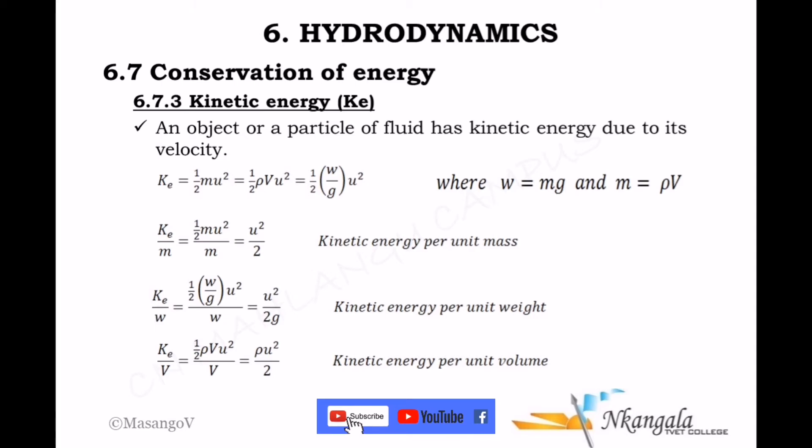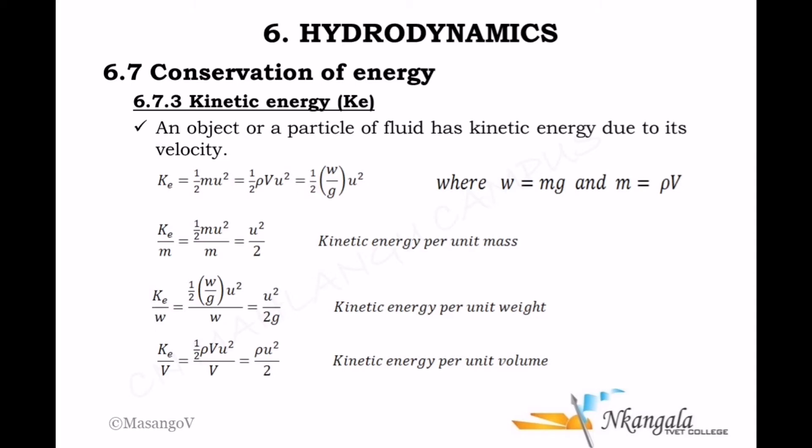The last form of energy is kinetic energy — the energy a fluid has because it is in motion and has velocity. We calculate kinetic energy using ½mv². Since mass is density times volume, or weight over g, we can replace that to get a number of equivalent equations. Similarly, kinetic energy can be calculated per unit mass, per unit weight, and per unit volume.